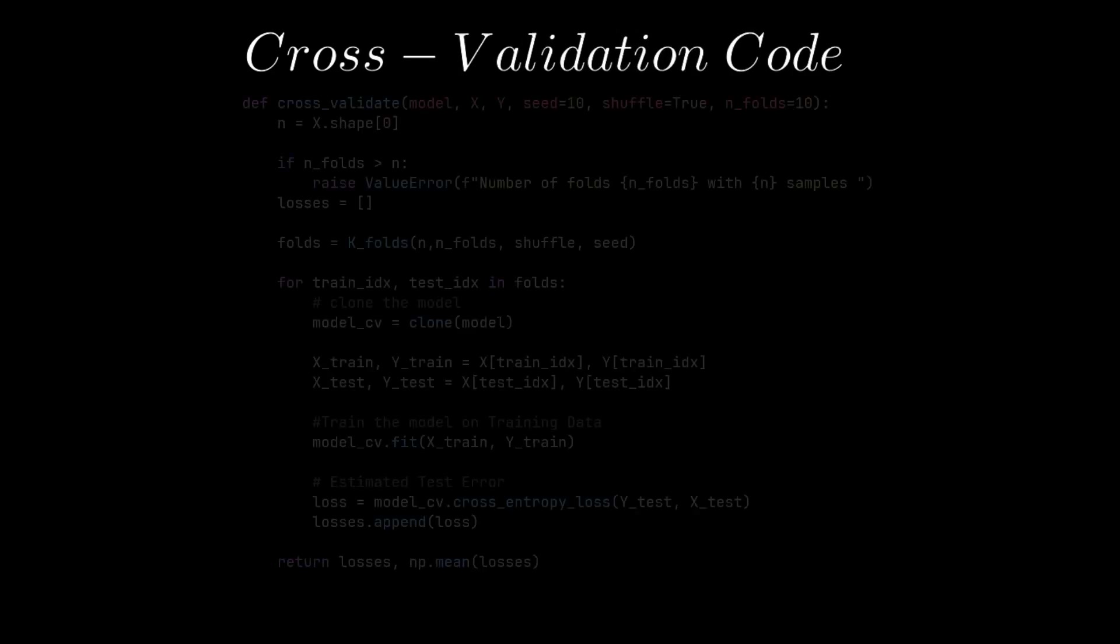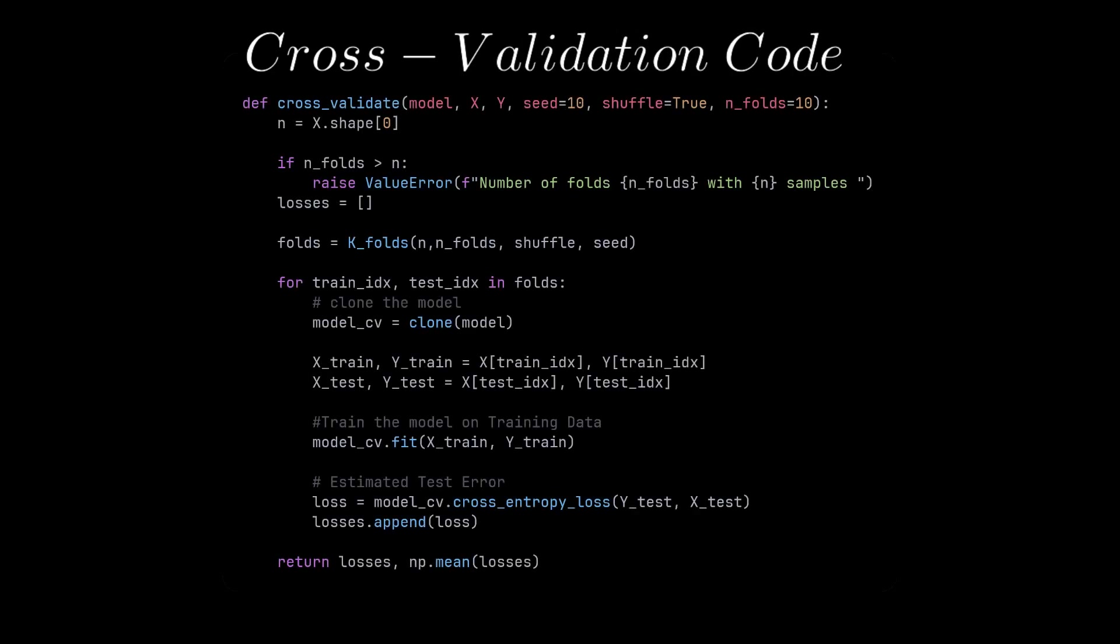Now we use it in the cross-validation function. We get the folds from the k-fold function and loop over the folds list. Inside, we split our data into train and test using the folds indices. We fit the model on the training data, then calculate the loss using the test or validation data, which is new to the model, and average out the losses across all folds and return the test error of our model, which represents how well the model will perform on real-world data.